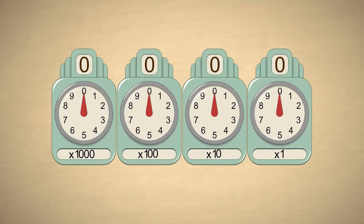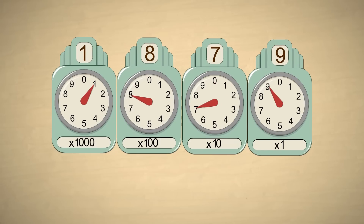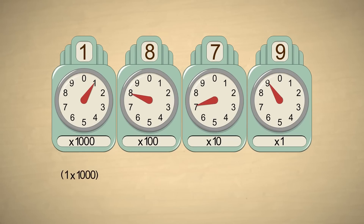For example, the value of the decimal number one thousand eight hundred seventy-nine is one times one thousand, plus eight times one hundred, plus seven times ten, plus nine times one.